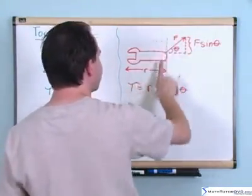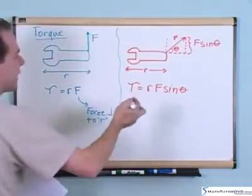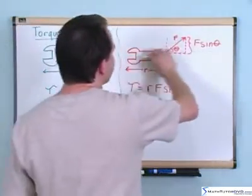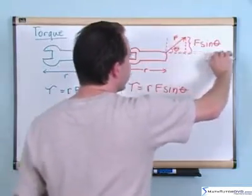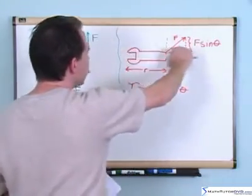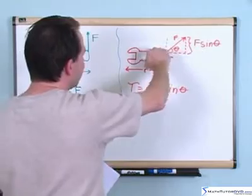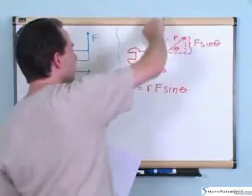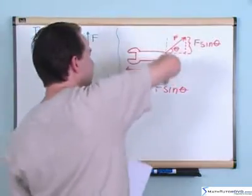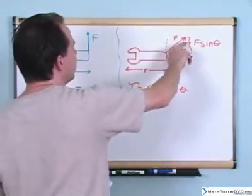Because basically all you're doing is you're decomposing the force and you're getting the component that matters, which is the component that's acting perpendicular here. And you can kind of convince yourself that any force acting in this direction, so let's say you move this force down here and you started pulling on it like this. Well, that's not going to generate any torque because that's just going to want to pull the wrench out. You're not going to be able to exert any angular force if you're pulling on it like this. You need to be pulling on it up like this. And that's why you use the F sine theta.